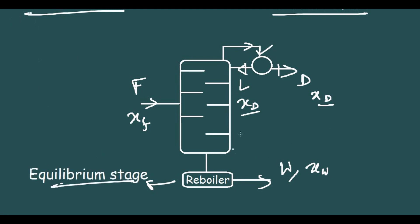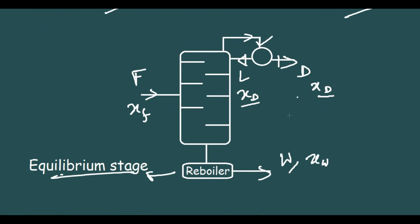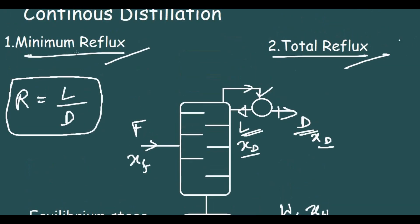Also remember that the reboiler is also an equilibrium stage. So these were the nomenclature from the previous video. Now what we are going to discuss is minimum reflux and total reflux. The reflux ratio is denoted by R and is equal to L divided by D — the ratio of the recycled stream to the distillate taken out.